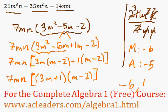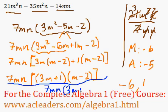I'll write the final answer: 7mn times (3m + 1) times (m - 2). And that's it.